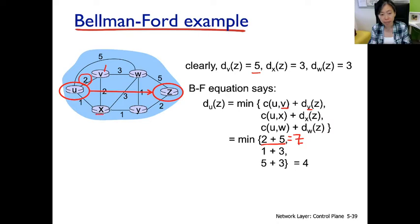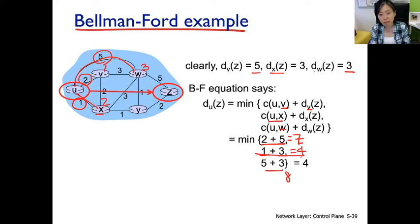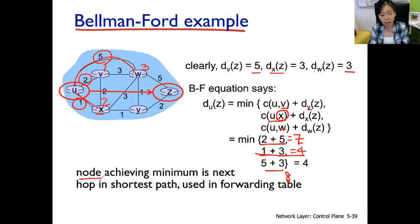For the second neighbor x: the link cost from u to x is 1, and Dxz is reported as 3, giving a sum of 4. For the third neighbor w: the link cost is 5, and Dwz is 3, giving a sum of 8. The minimum value is 4, which is the minimum cost from u to z. Therefore, x is the next hop leading to the shortest path, and the link pointing to x is the interface to insert in the forwarding table for destination z.